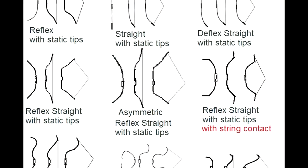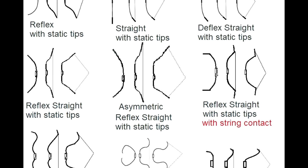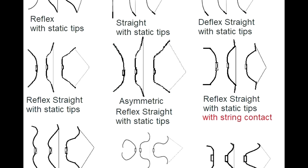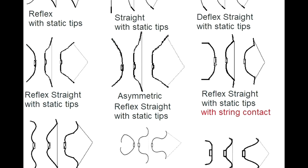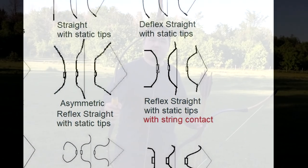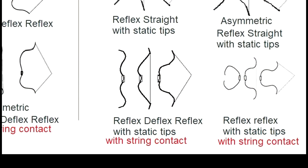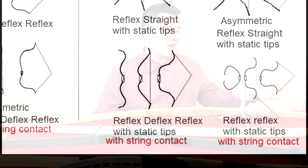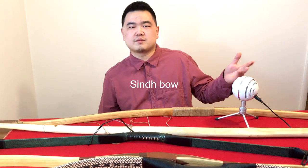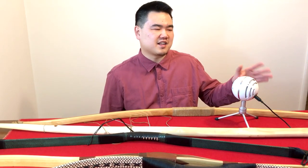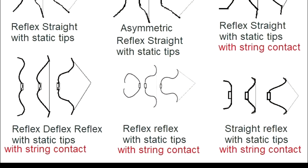Then you have asymmetric ones — the Huns, from Byzantine sources, are described as using asymmetric reflex-straight with static tips, the same design just asymmetric to accommodate a higher nocking point. Then there's reflex-straight with static tips and string contact — that's basically your Manchu bows and Qinghai bows. Some people call it reflex-recurve with static tips, but I avoid the word 'recurve' as it's a modern terminology. Then you have the reflex-deflex-reflex with static tips and string contact — the only example I found is the Sindh Indian bow, which is a very complicated Indian bow design. And then reflex-reflex with static tip and string contact — that's your Mughal crab bows; some Persian and Turkic bows look like this.